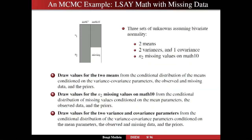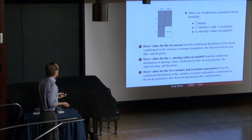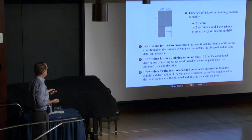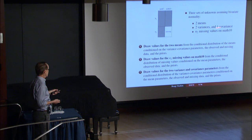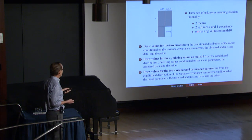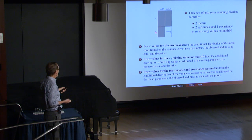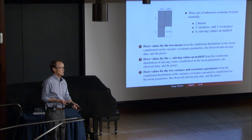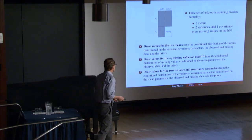In this case you have a bivariate situation: mathematics scores in grade 7 and grade 10. For some people you have missing data in grade 10 — perhaps they dropped out of high school. Assuming bivariate normality, Bayesian analysis considers three sets of unknowns: the two means, the two variances and covariance, describing the five parameters of the bivariate normal. And third, the missing values on Math 10 for those N2 people. The missing values become unknowns in Bayes — they become parameters — so for the same price you get the imputed values.